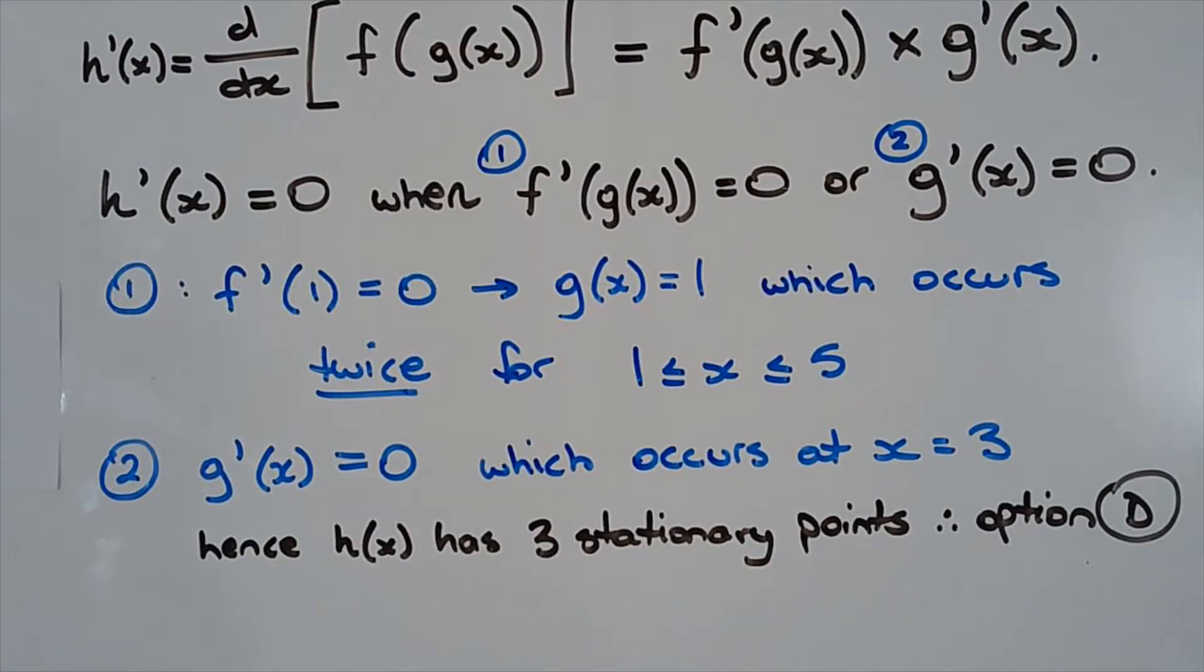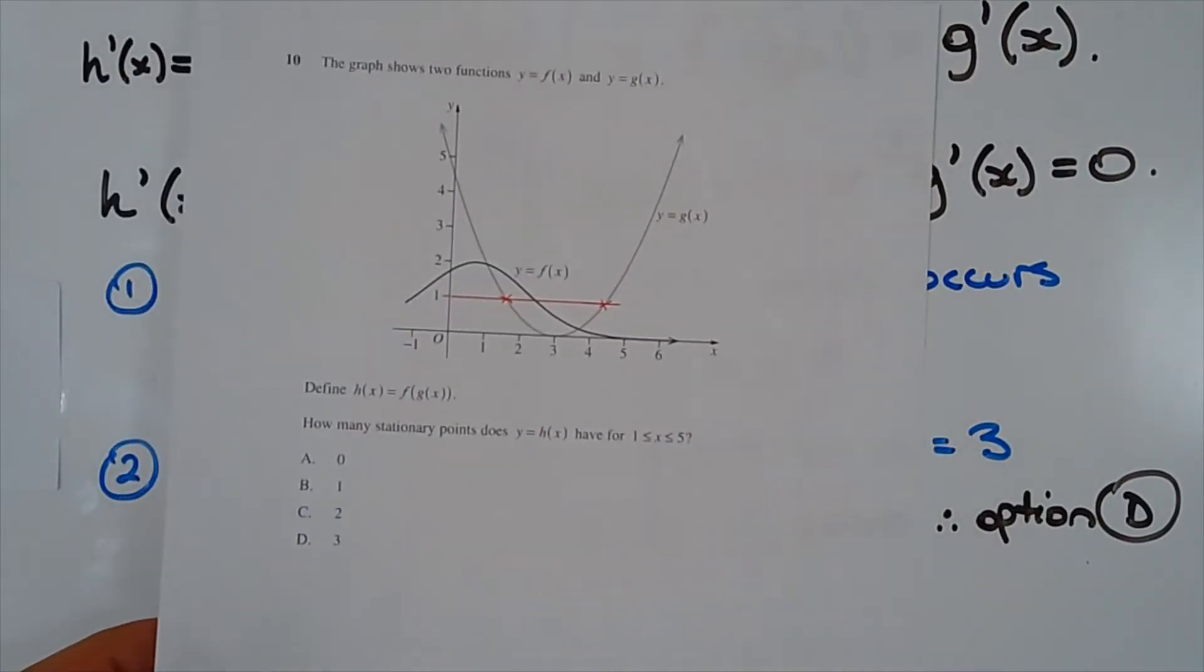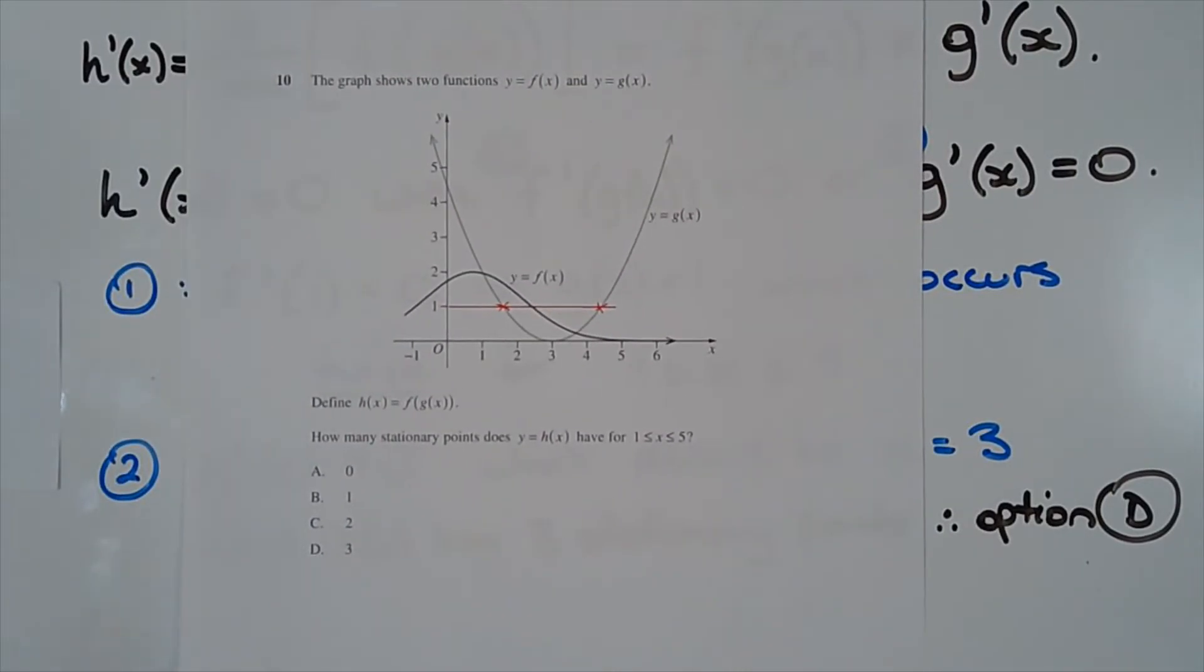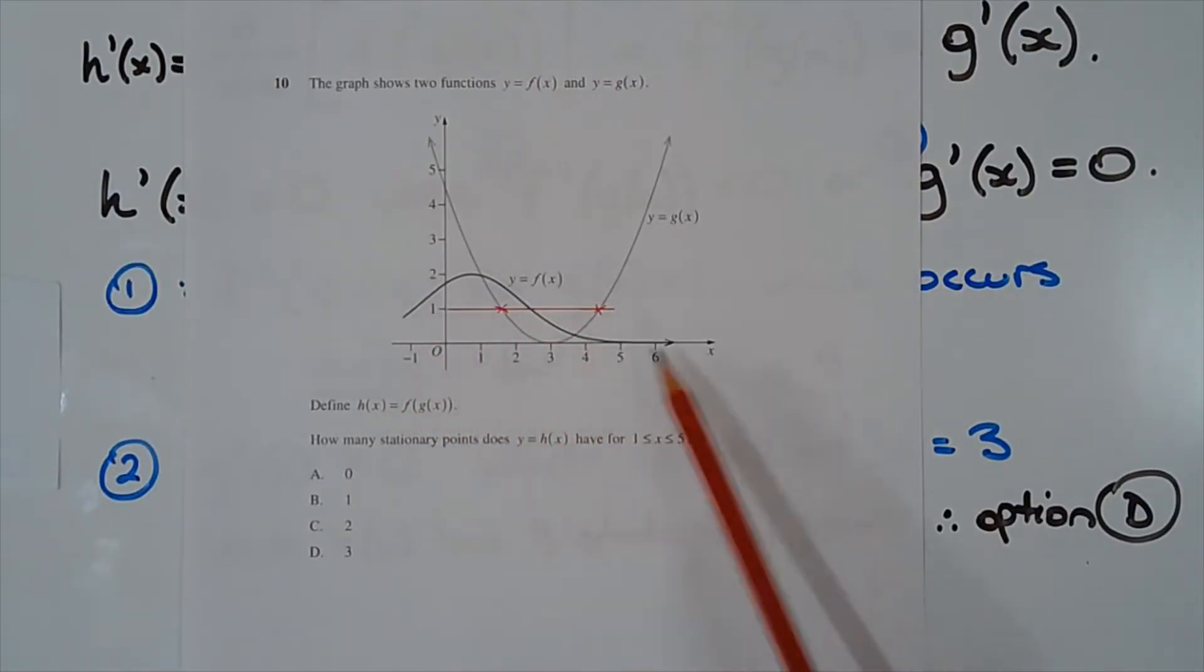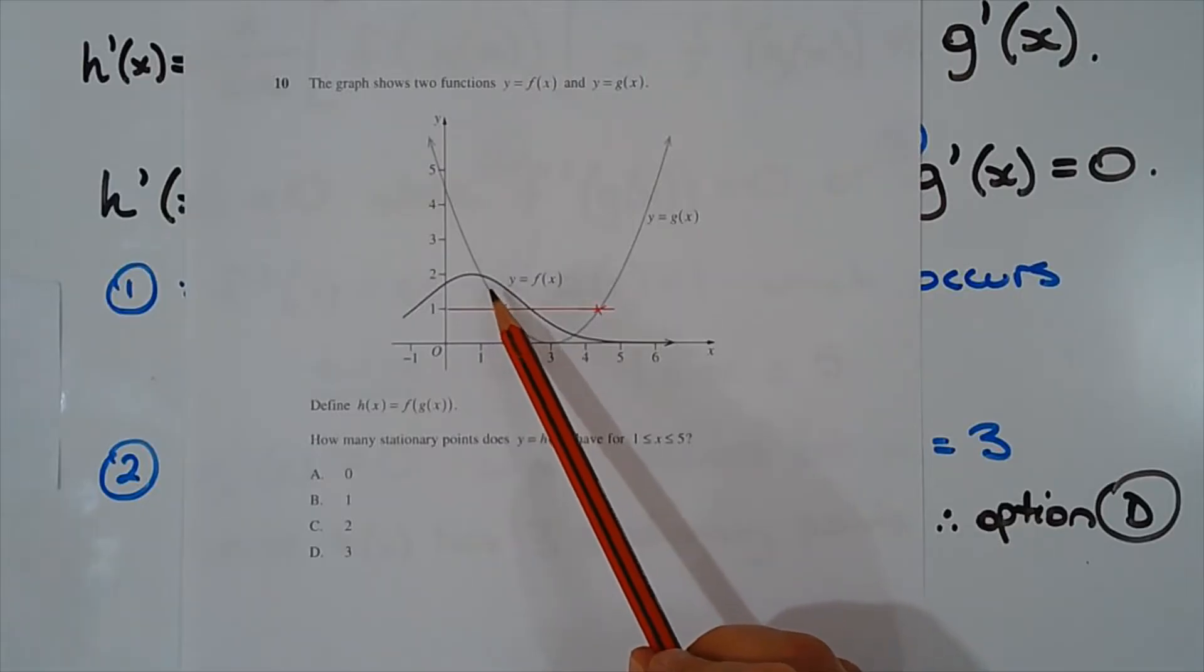Consider case 1, where f dash of g of x equals 0. If we go back to the original graph, let's have a look at y equals f of x. We can see that there's a stationary point that occurs when x equals 1. In other words, f dash of 1 equals 0.